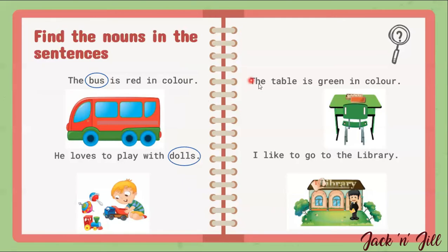Shall we see the next sentence? 'The table is green in color.' What is the noun here? Good — table is the noun here. Table is an example of a thing. Very good, kids — you are all doing very well!